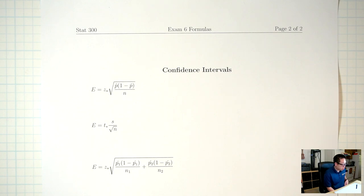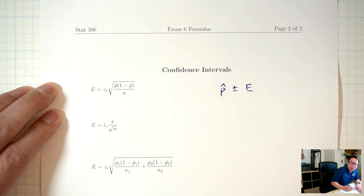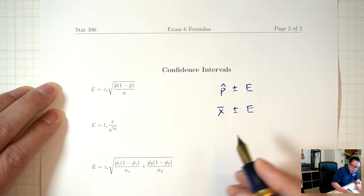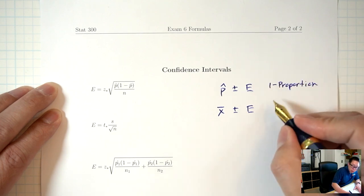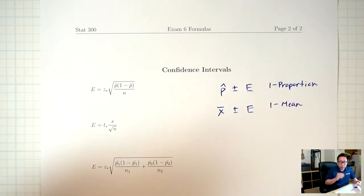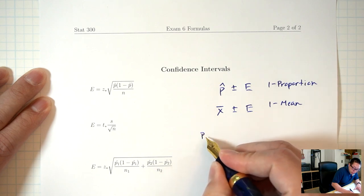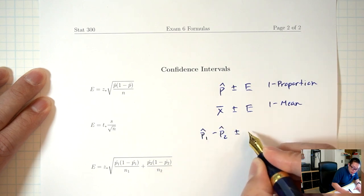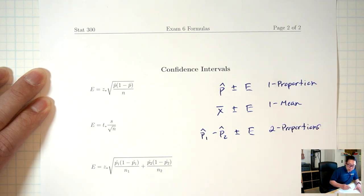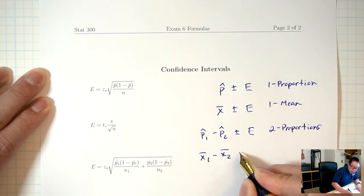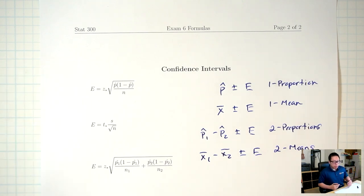Back in Chapter 8 when we talked about confidence intervals, the end product was something that looked like either p-hat plus or minus the margin of error, or x-bar plus or minus the margin of error. The first one was for the one-proportion situation, and the second one was for the one-mean situation. Today we'll talk about the two-proportions and the two-means situation. For the two-proportion situation, the end product is going to look like p-1-hat minus p-2-hat plus or minus the margin of error. The two-means is going to be x-1-bar minus x-2-bar plus or minus the margin of error. The question is, how do you find the margin of error? It's different in each one of these situations.